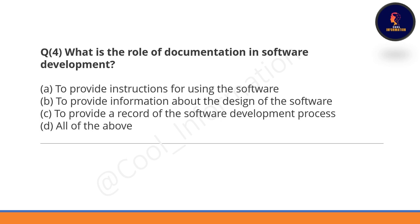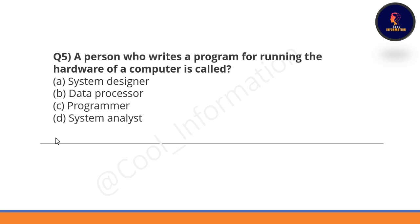Question 4: What is the role of documentation in software development? Option A is 'to provide instructions for using the software,' Option B is 'to provide information about the design of the software,' Option C is 'to provide a record of the software development process,' and Option D is 'all of the above.' The correct option is D — all of the above.